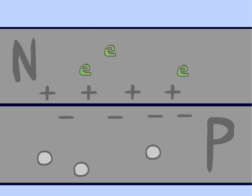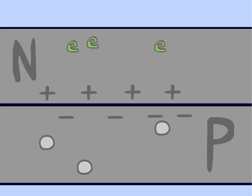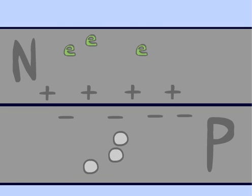This electric field prevents more diffusion of electrons to the P layer and holes to the N layer, and even causes some diffusion in the opposite direction.